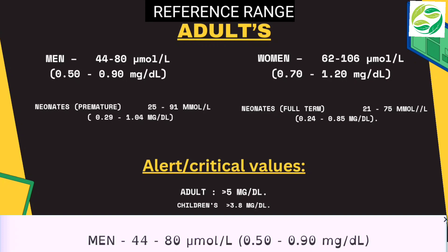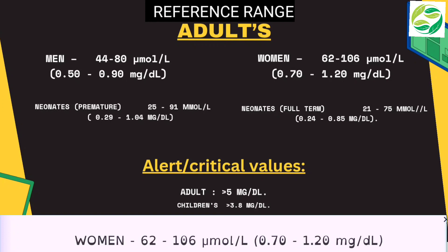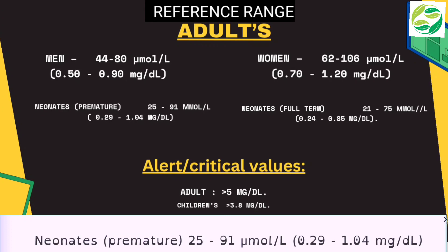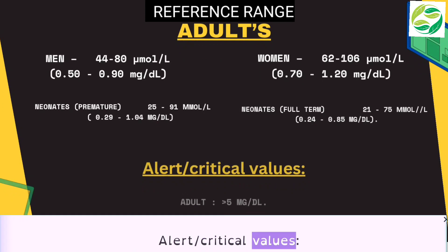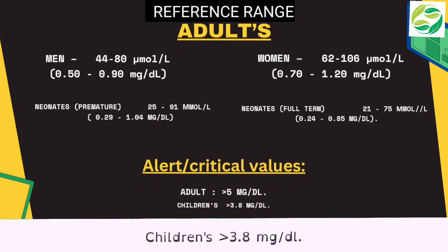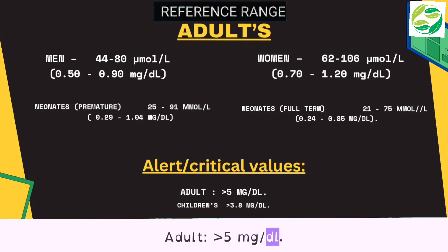Reference ranges — Men: 44 to 80 micromol/L (0.50 to 0.90 mg/dL). Women: 62 to 106 micromol/L (0.70 to 1.20 mg/dL). Neonates: 25 to 91 micromol/L (0.29 to 1.04 mg/dL); and 21 to 75 micromol/L (0.24 to 0.85 mg/dL). Alert critical values — Children: greater than 3.8 mg/dL; Adults: greater than 5 mg/dL.